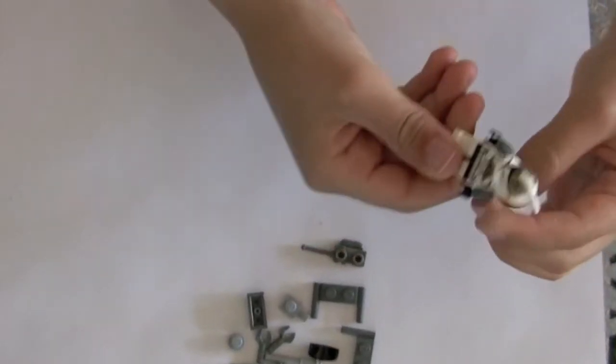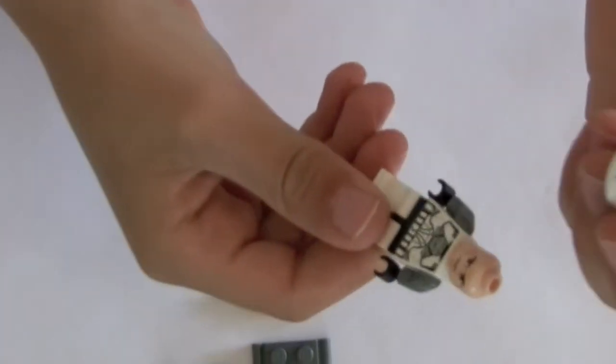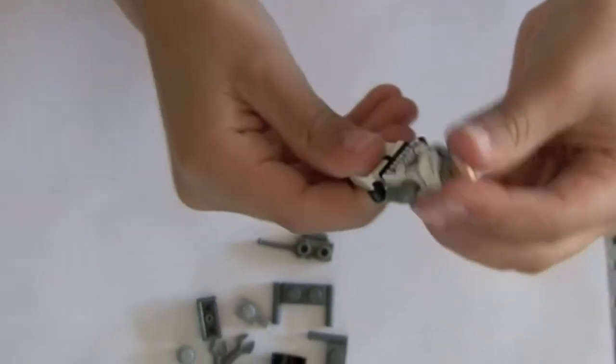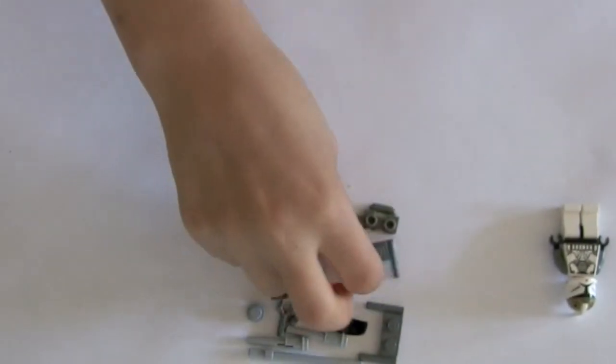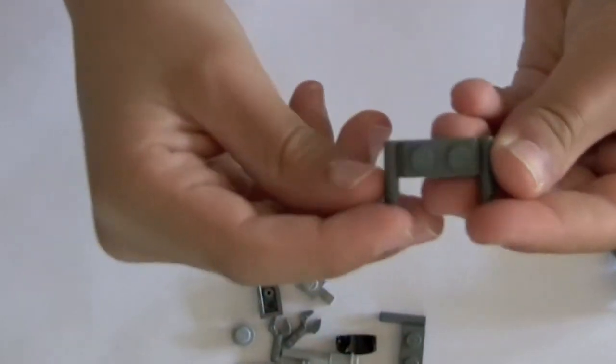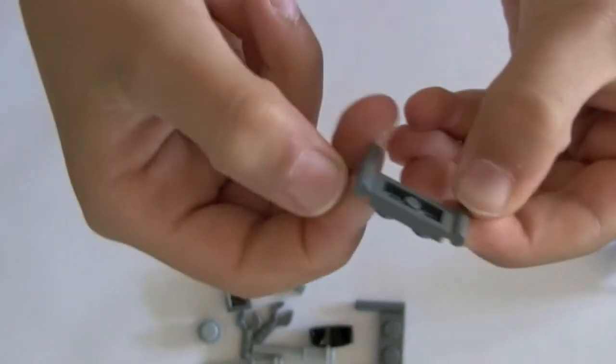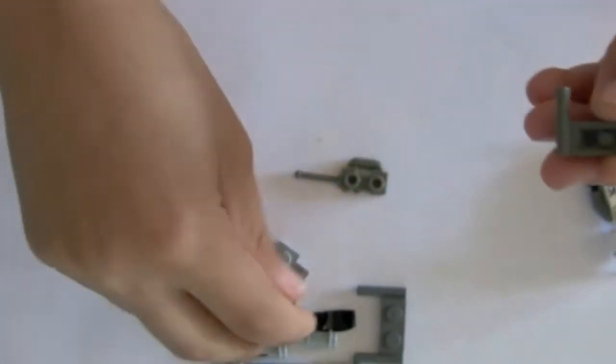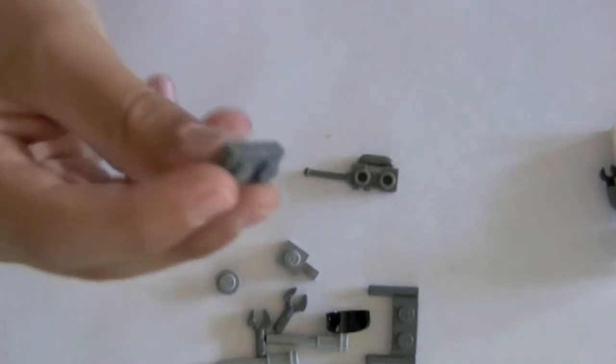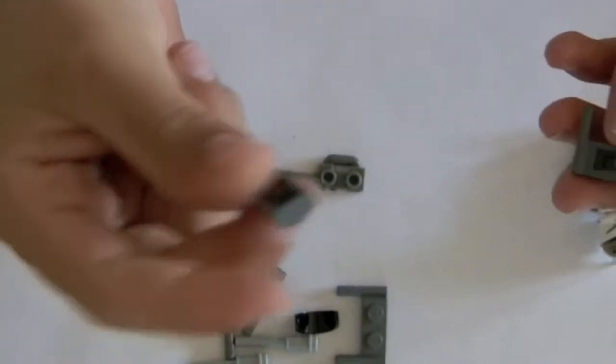I'm going to show you my clone gunner with the helmet and face. First you need a piece like that, you put it upside down. Then you take a piece like that upside down and put it like that.